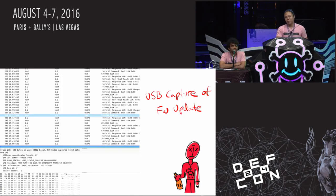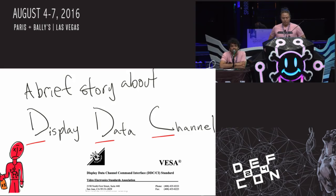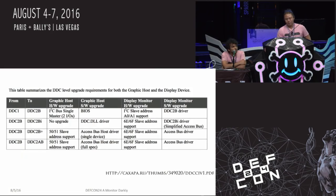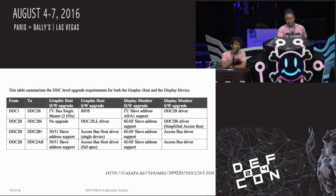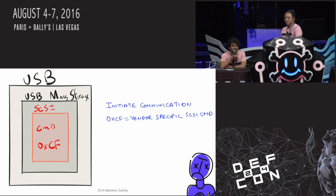DDC is the Display Data Channel communication set up by VESA. It's used by the host adapter to query the monitor about hardware capabilities — vendor, resolution, and so on. There are multiple versions: DDC 2B, 2BI, AB, and 2B+. We are working with 2BI, which is a next version of 2B that works over I2C and talks to the host adapter. When communication is initiated, the host adapter sends a SCSI command with code CF, a generic vendor code, wrapped in a USB mass storage packet sent over USB.